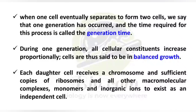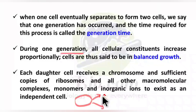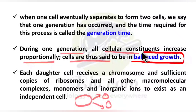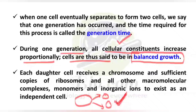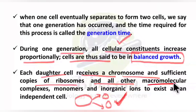One more important point: during one generation — when a cell divides into two cells — the rest of the cellular constituents like proteins, carbohydrates, and nucleic acids all increase proportionally. The cell is said to be in balanced growth. Each daughter cell will receive a chromosome and sufficient copies of ribosomes and all other macromolecular complexes, monomers, and inorganic molecules to exist as an independent cell.